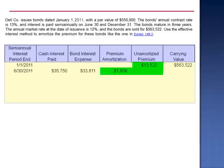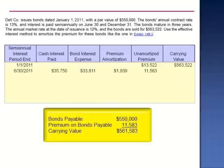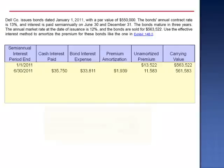The carrying value moves toward the par value by $1,939. We subtract $1,939 from the unamortized premium, dropping it to $11,583, which drops the carrying value to $561,583.